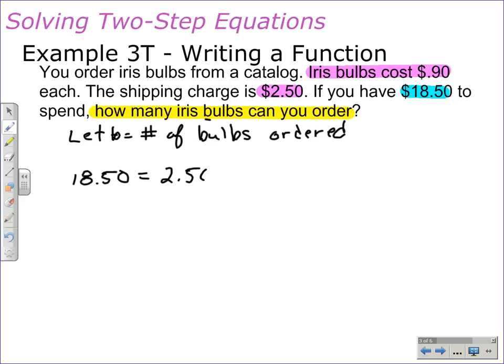And that's going to be equal to the sum of the two parts. The one part is the shipping charge, $2.50. That's a flat rate. No matter how many bulbs I order, they're going to charge $2.50 for shipping. The rate that changes, or the value that changes, is going to be the iris bulb, or the cost of the iris bulbs, and that's because we don't know how many I can order. So, we're going to write that part as $0.90 times B, the number of bulbs ordered. So, how much money I have to spend is equal to the cost of the shipping, plus the cost of the iris bulbs. So, we have to solve this equation for B to figure out how many iris bulbs I can order.